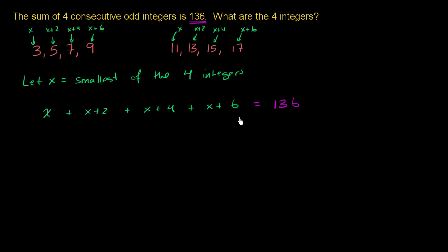And now we can just solve for x. We have just one unknown here. So let's add these x terms together. We have 1x, 2x's, 3x's, 4x's. So we can rewrite those as 4x. And then we have 2 plus 4, which is 6, plus another 6 is 12. 4x plus 12 is equal to 136.